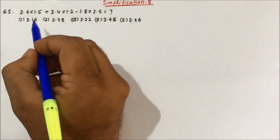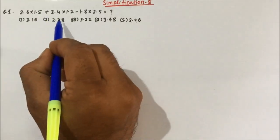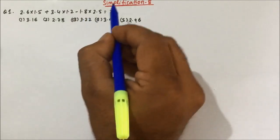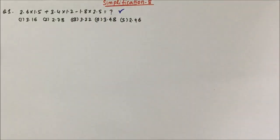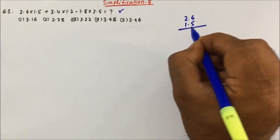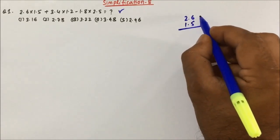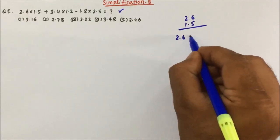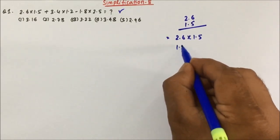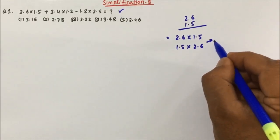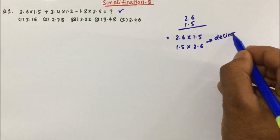Our first question is: 2.6 × 1.5 + 3.4 × 1.2 − 1.8 × 2.5 = ? If you multiply by the normal method, it will take more time, and there are decimals involved too. So let's understand how to multiply efficiently. For 2.6 × 1.5, write it as 1.5 × 2.6 and then forget the decimal for some time — just ignore any decimals present.